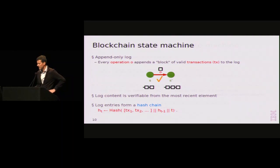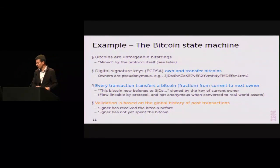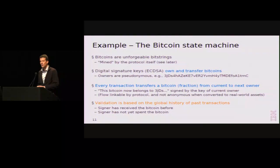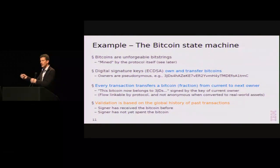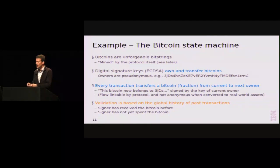In the Bitcoin state machine, you have transactions that move Bitcoins between different public keys. These public keys represent owners by the fact that some user knows a private key corresponding to the public key. The owners are pseudonymous in the sense that only keys are known. Every Bitcoin transaction is a statement of the form that this Bitcoin fraction now belongs to that other key. The validation is based on the fact that you have to own this Bitcoin before you can spend it, and you must ensure that someone spending a Bitcoin has not already spent it before — which requires verifying based on past payment history.